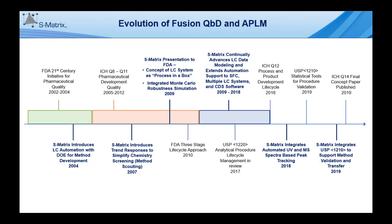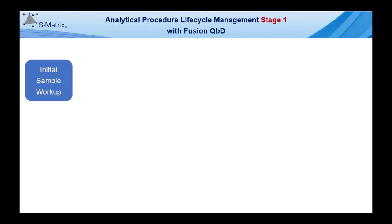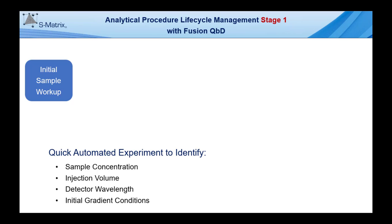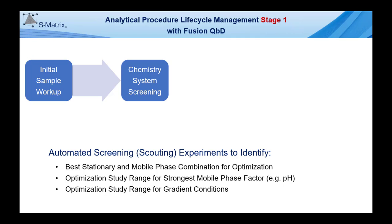Let's now briefly look at Fusion QBD within the context of analytical procedure lifecycle management, first with Stage 1 method design and development. Fusion QBD supports all phases of Stage 1, from initial sample workup to quickly identify the right sample concentration, injection volume, detector wavelength, and initial gradient conditions for method development. The initial sample workup leads into chemistry system screening, which with Fusion QBD automation enables rapid identification of the best stationary and mobile phase combination for optimization, the optimization study range for the strongest mobile phase factor or factors — for example, pH in a reverse phase method — and the optimization study range for the gradient conditions.